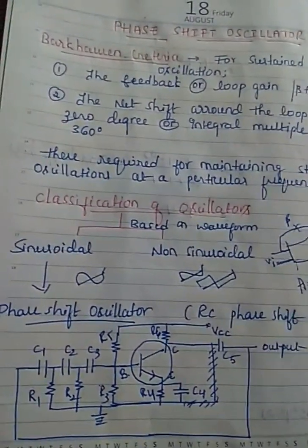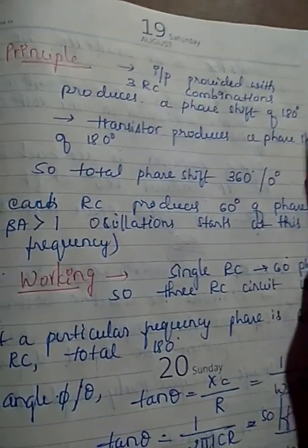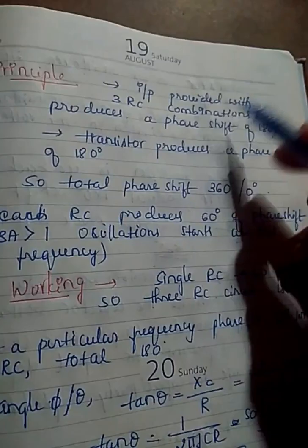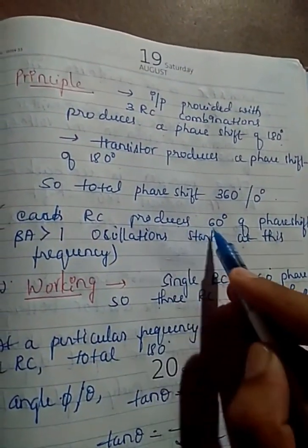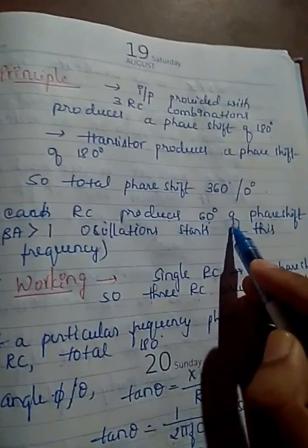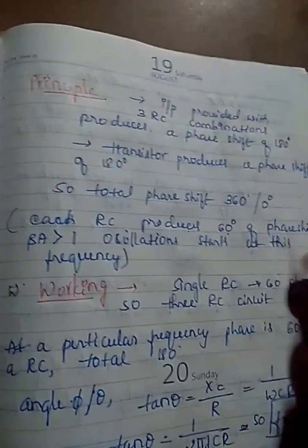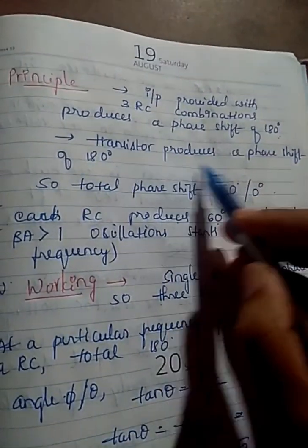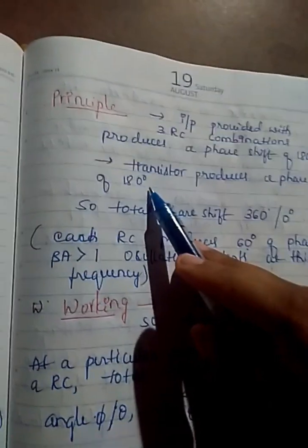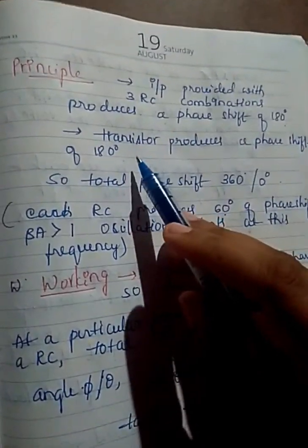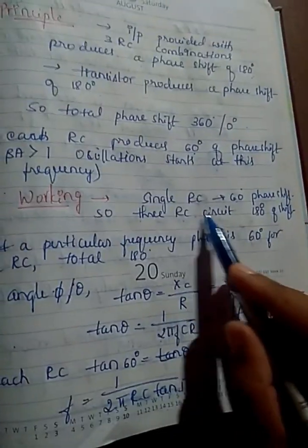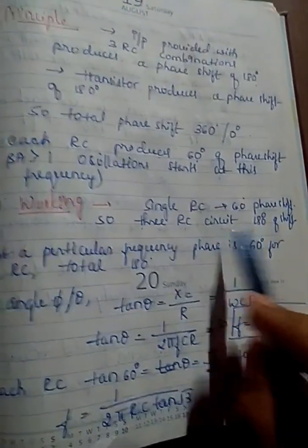The principle of this oscillator is that the input is provided with three RC combinations. As we know, this produces a phase shift of 180 degrees — each RC produces a phase shift of 60 degrees, so three RC circuits give a total of 180 degrees. The transistor also produces a phase shift of 180 degrees due to the amplification occurring in it.